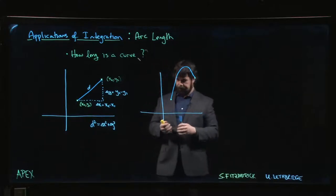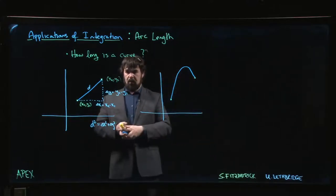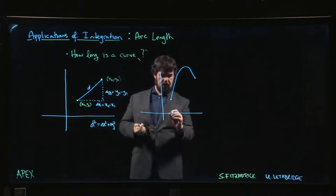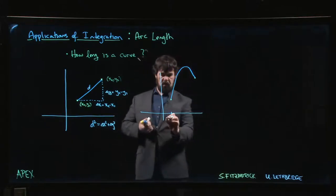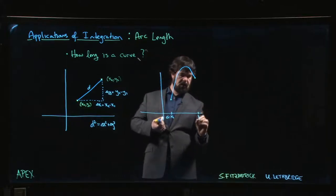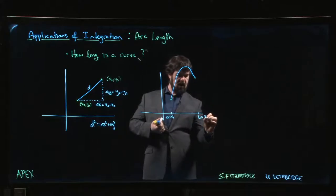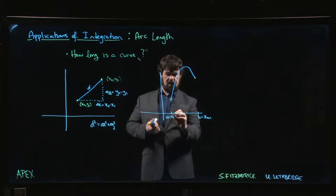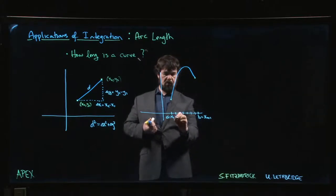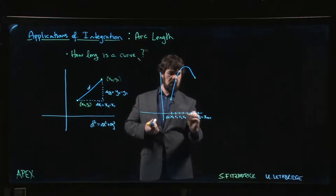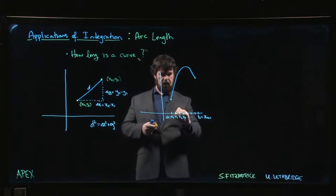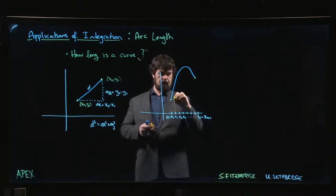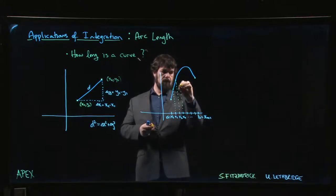We fall back to a technique we've used many times before. We start with an initial point x1, which we'll call a, and end at a final point we'll call x_(n+1), which we'll call b. We introduce a whole bunch of other points in between — x2, x3, x4, and so on — partitioning the interval, which introduces a bunch of intermediate points on the curve.